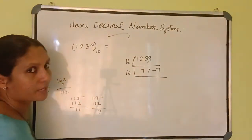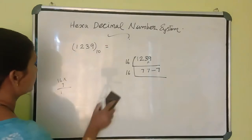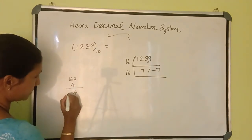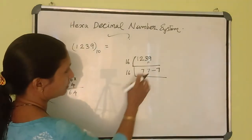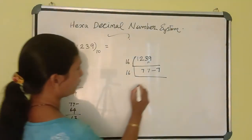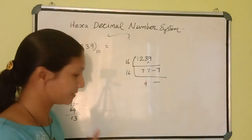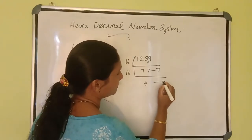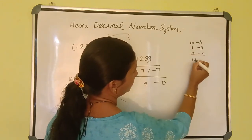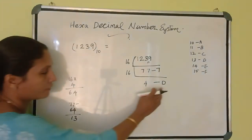Again you have to take the division using 16. 16 into 4 gives you 64. Then, 77 minus 64 gives you 13. So 4 times it will go. But we can't write 13 as a remainder directly, because in hexadecimal number system, 13 represents D — which is an alphabet. I already told you: 10 represents A, 11 represents B, 12 represents C, 13 represents D, 14 represents E, 15 represents F. So we got 13 as a remainder here, but we will write D.